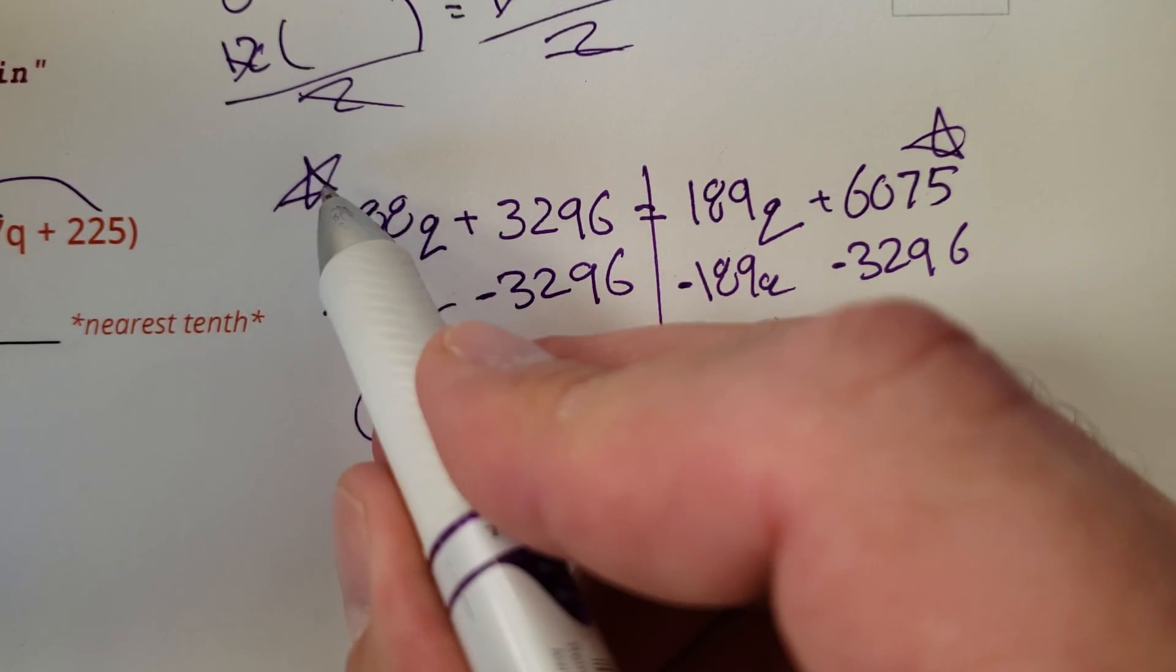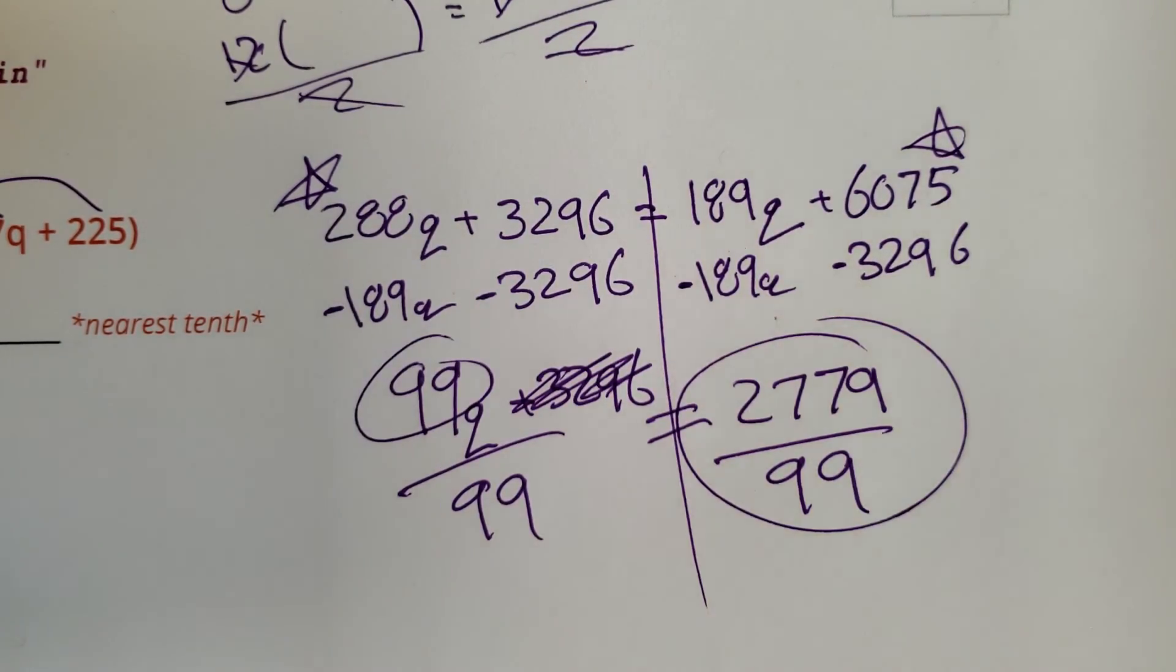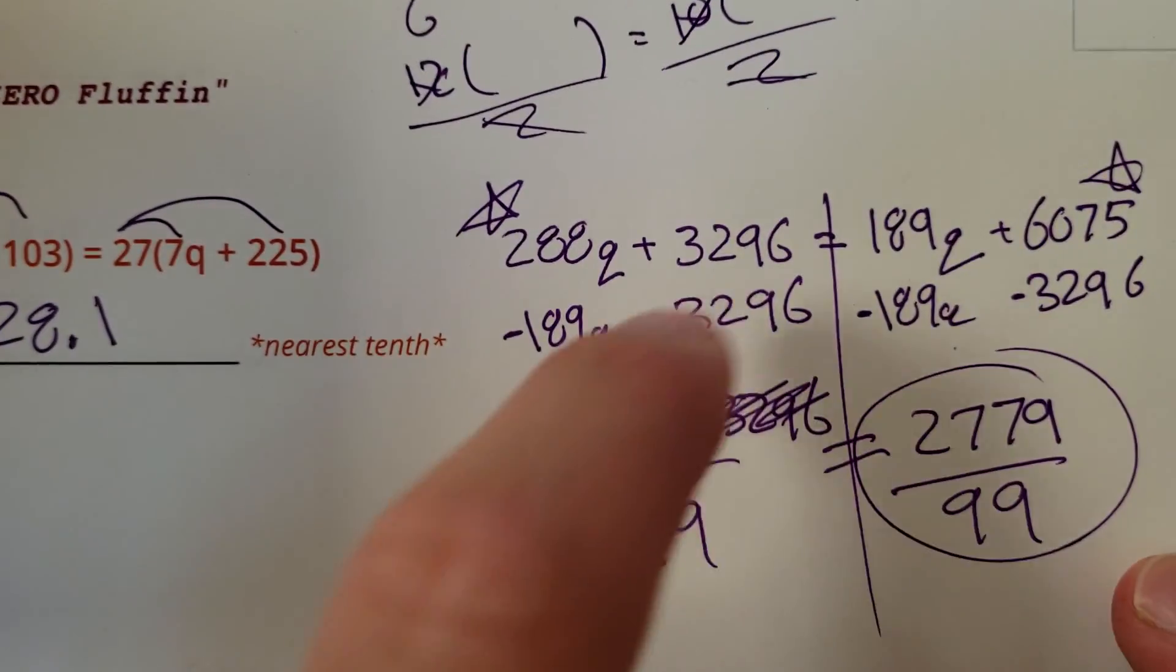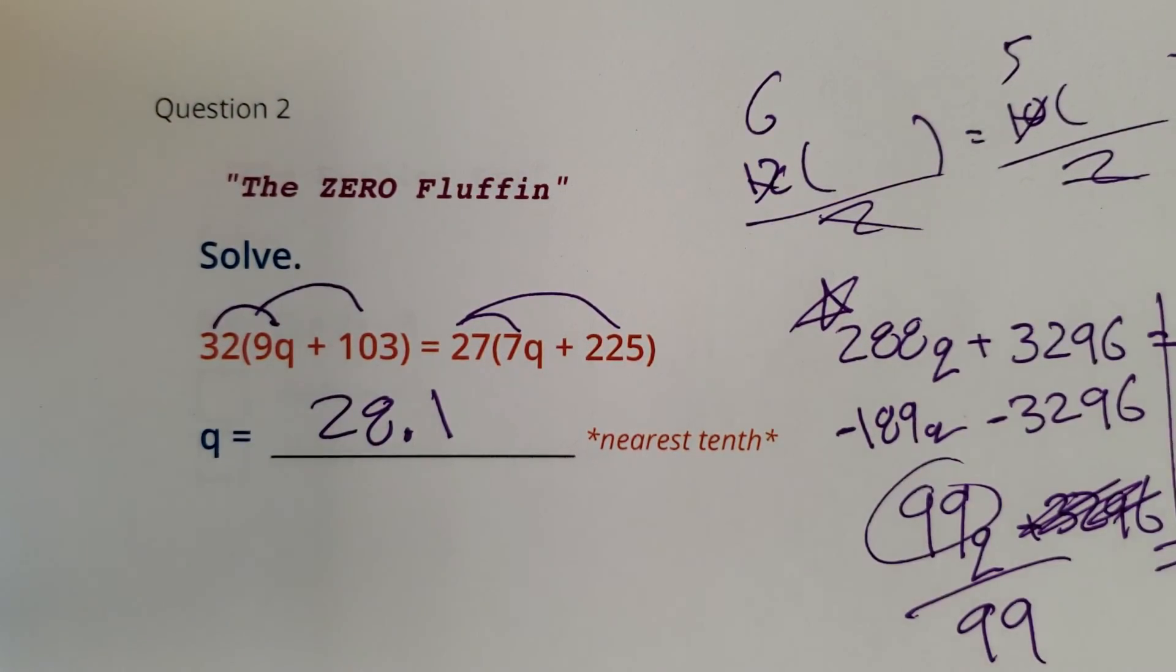Now you've got to be careful how you do it. If this one is bigger, you've got to find this one's difference. So you can't just pick the same side. It's kind of an advanced shortcut. Use it if you want. Otherwise, your one, two, three steps also work. Alright, that was the zero fluffing.